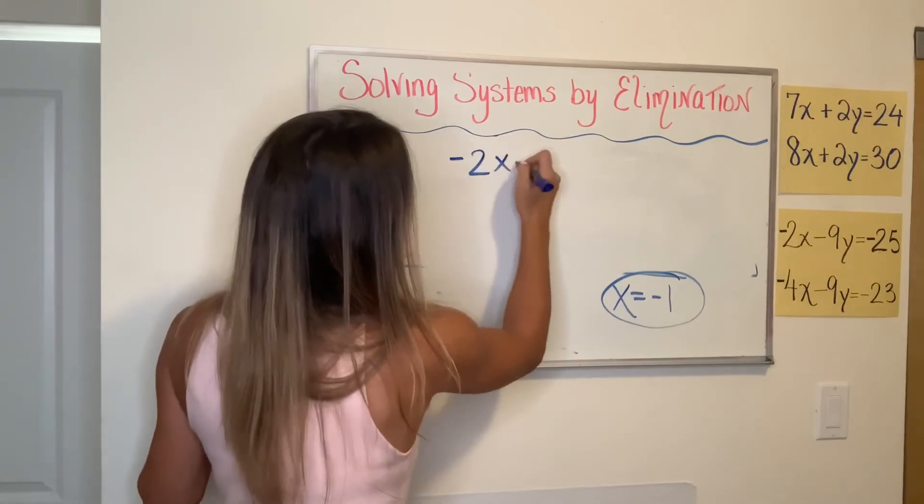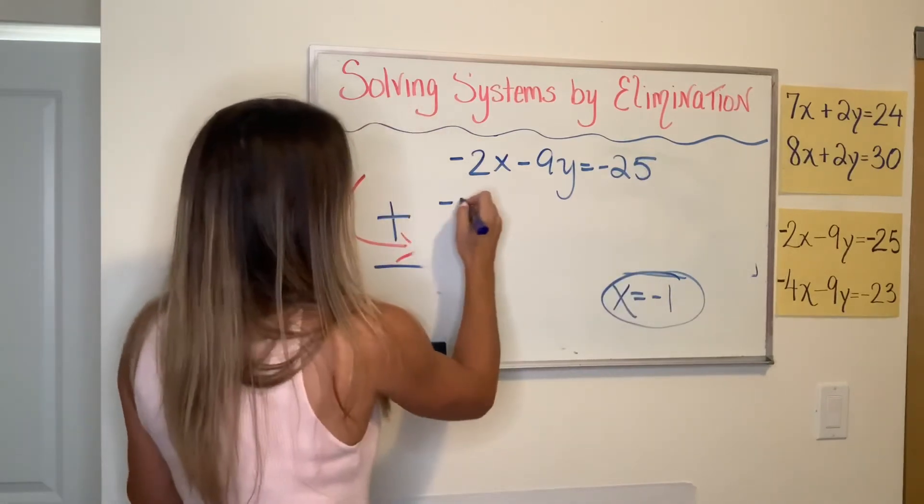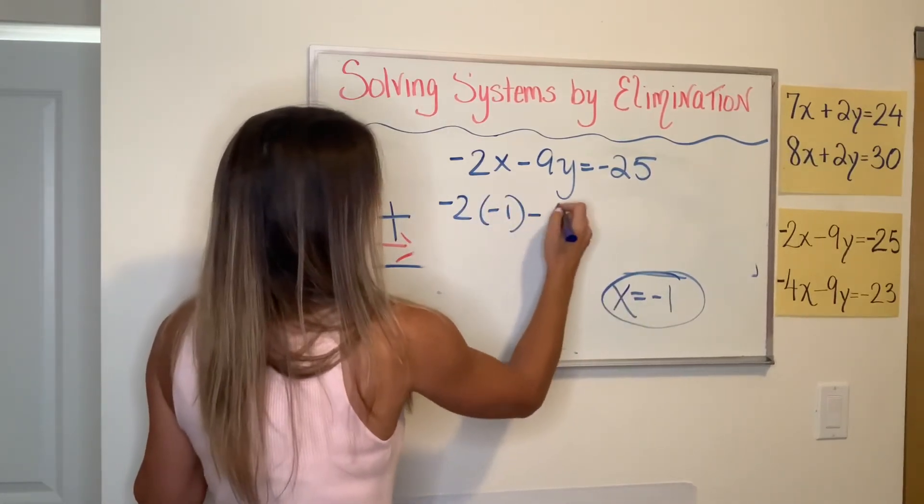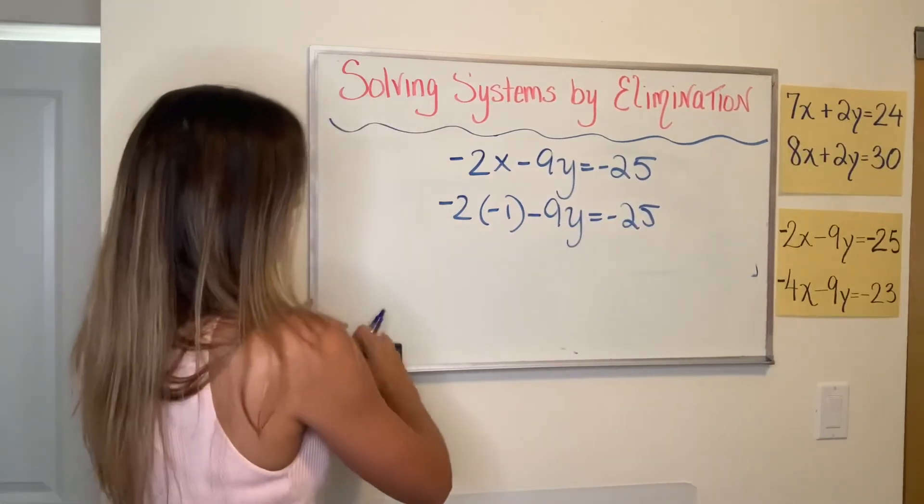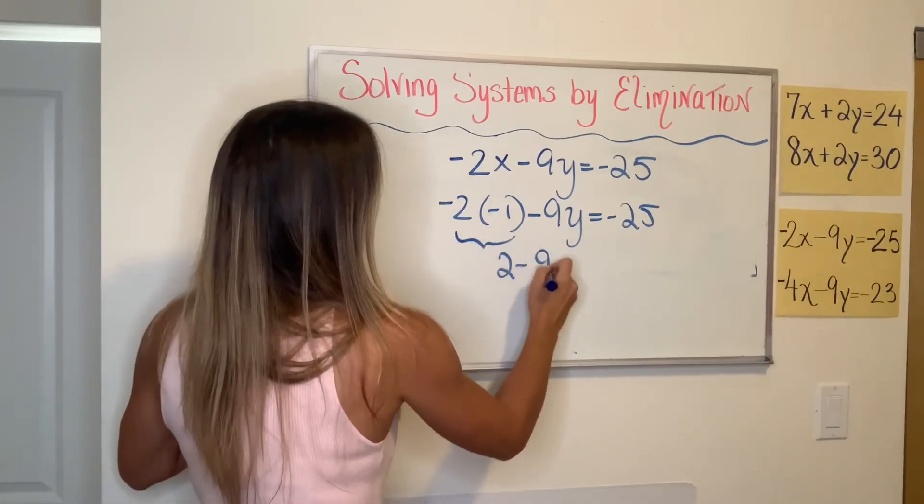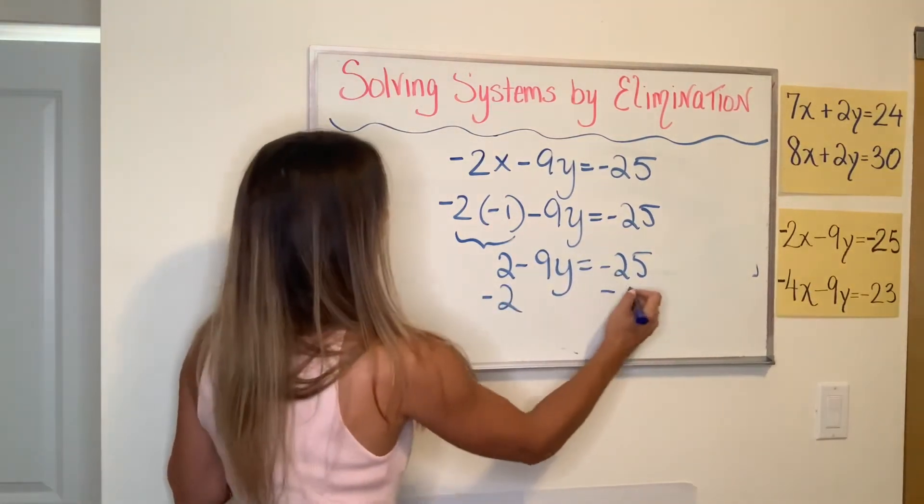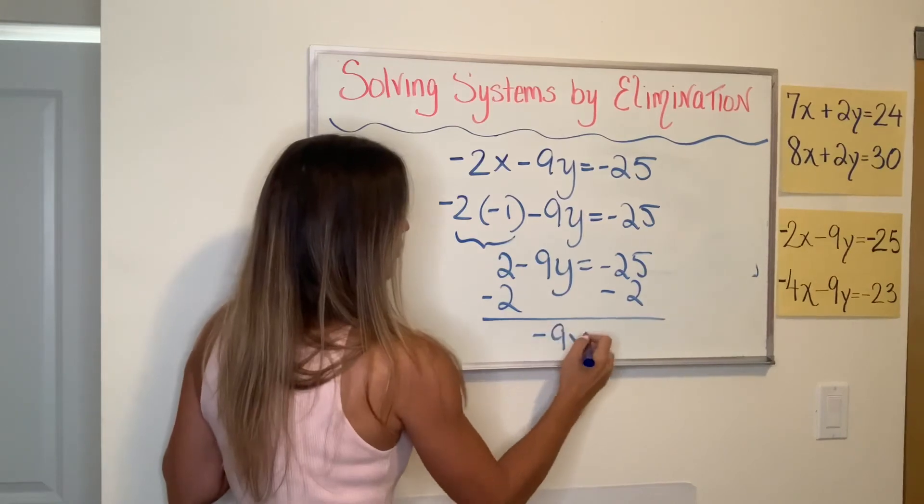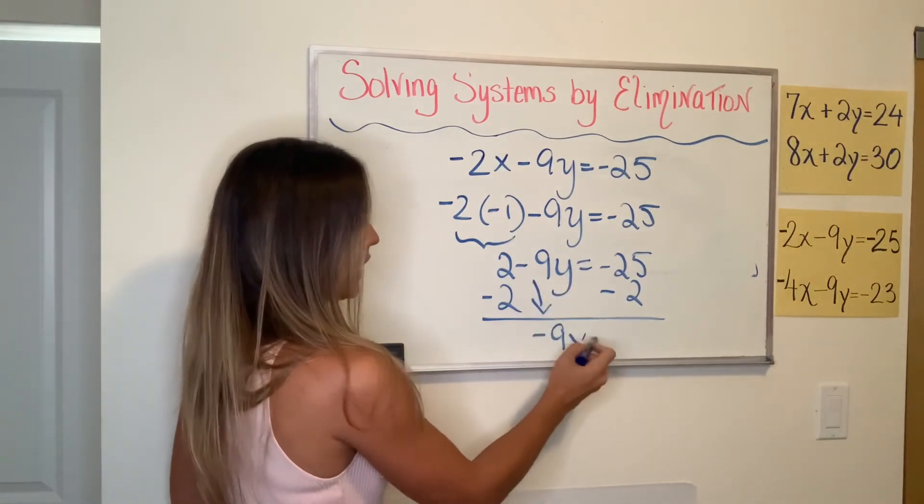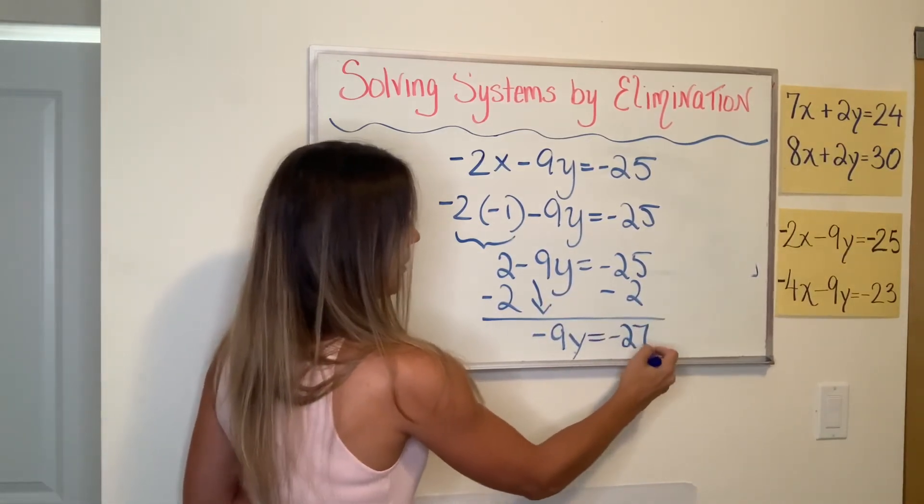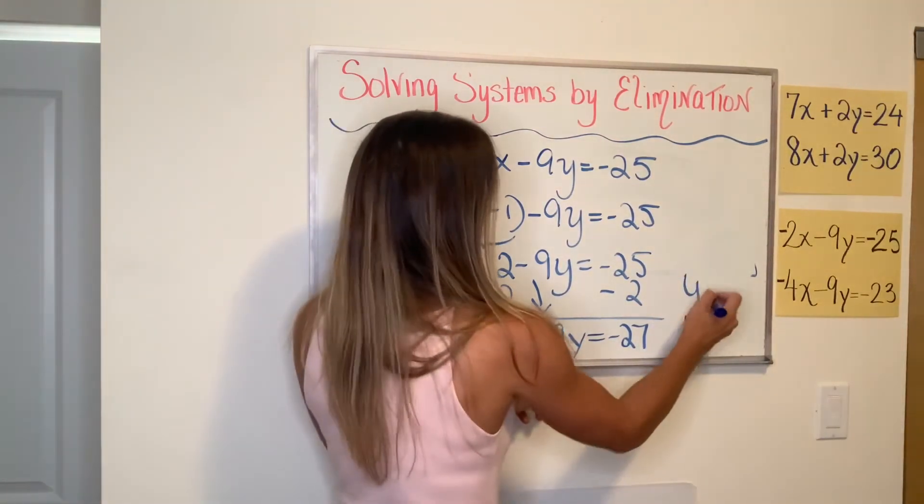So I'm going to take that top equation, negative 2X minus 9Y equals negative 25. And now instead of writing X, I'm going to substitute it with the negative one that we got right here. And now I'm just going to solve my equation. So negative 2 times negative 1 is positive 2. I have 2 minus 9Y equals negative 25. I'm going to subtract 2 from both sides. That'll give me negative 9Y. So don't forget when you're solving equations, if you're bringing things down, the term comes with the sign before it. So that's negative 9Y equals negative 27. And then we're going to divide by negative 9 on both sides. And that will give me Y equals 3.